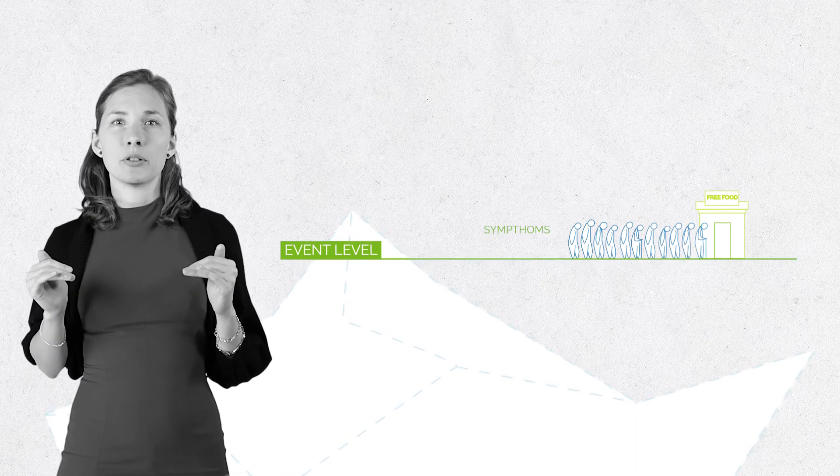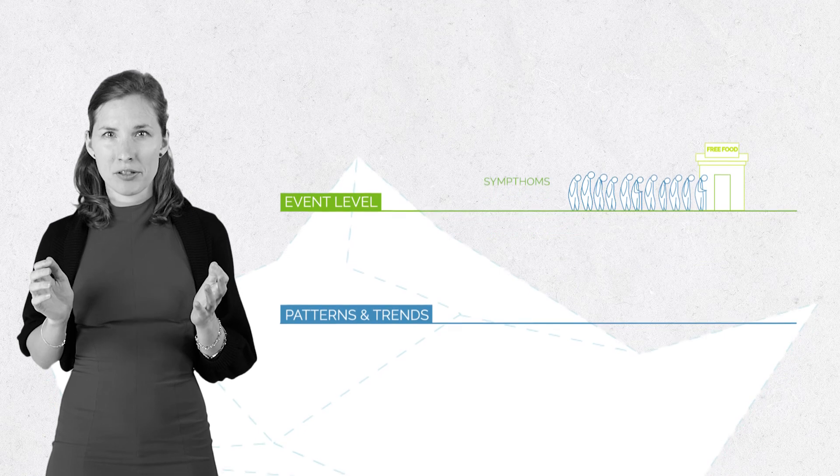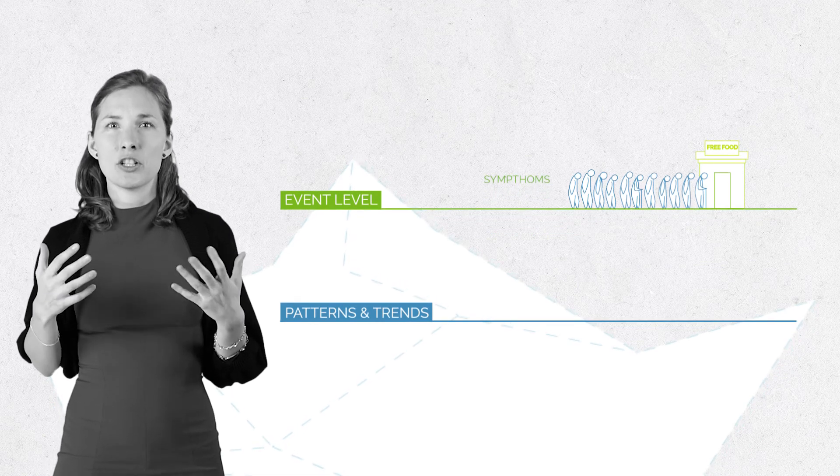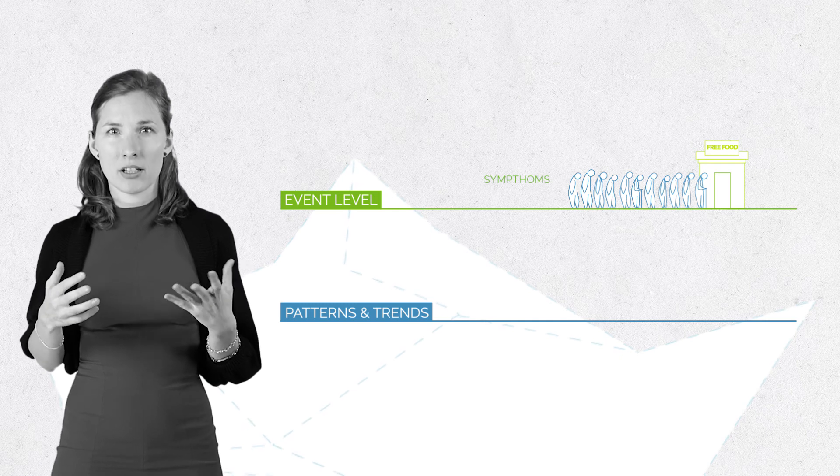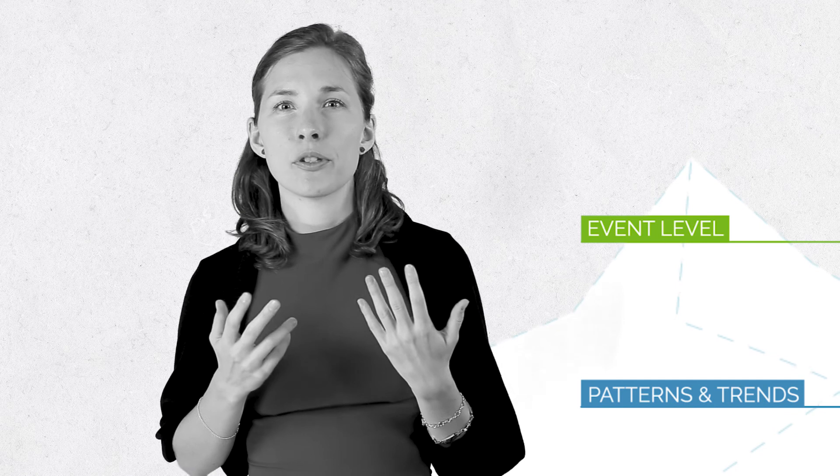Then we go one layer deeper to the level of trends and patterns. To understand larger trends, we can ask the question, what has been happening over time. At this level, we can observe events that happen over and over again.